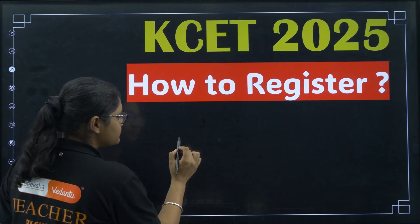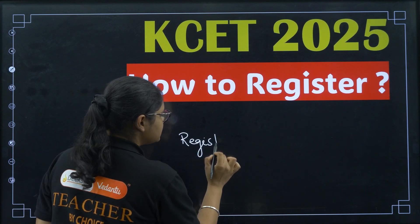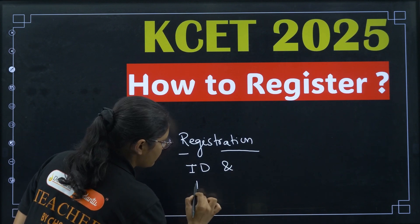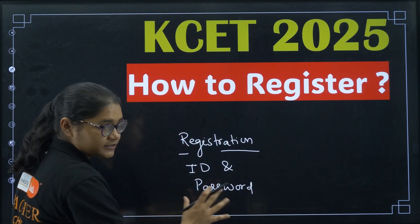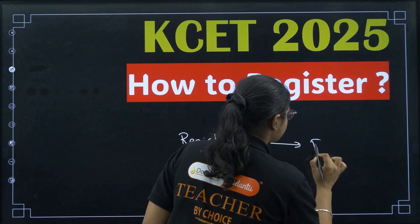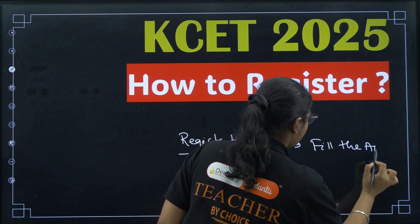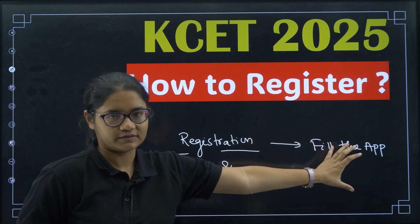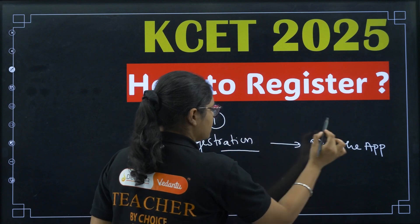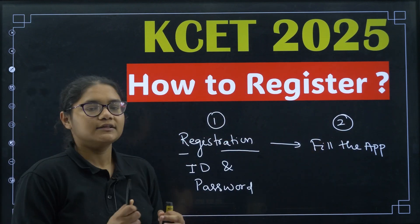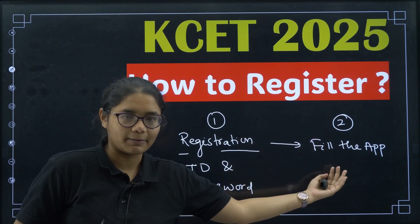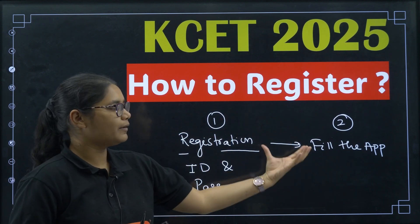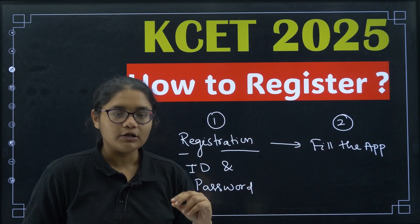There are two processes. The first process is registration. Once you are done with the registration, you will get your ID and your password. After the registration process is done, you have to go and fill the application form. While filling the application form, you need to submit all your certificates and documents. Registration is step one and filling the application form is step two.